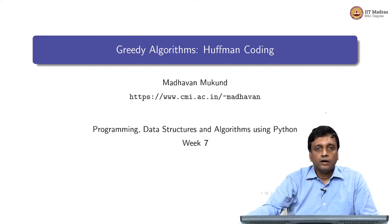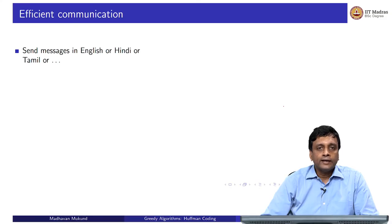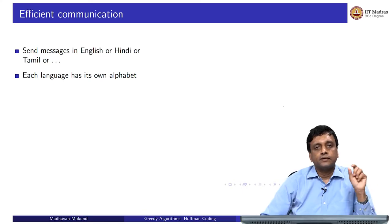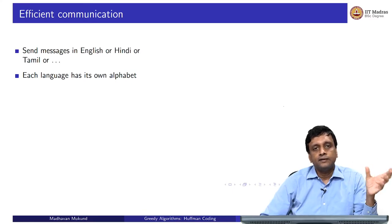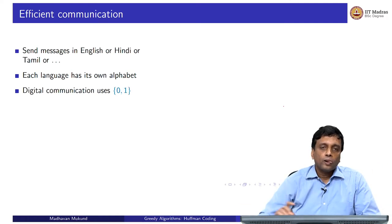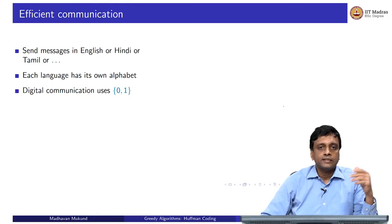This new domain is that of communication — specifically, efficient communication. When we send a WhatsApp message or an email, we are communicating in some language, such as English, Hindi, or Tamil. Each language has its own alphabet, its own set of symbols. As we all know, this communication happens digitally, and in digital communication, the only thing transmitted from sender to receiver is a sequence of zeros and ones.